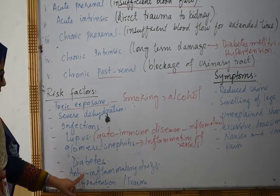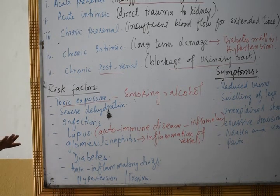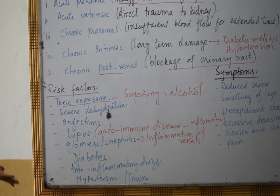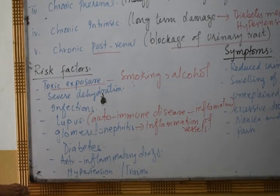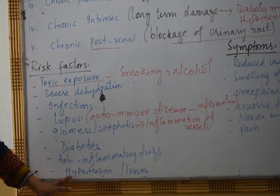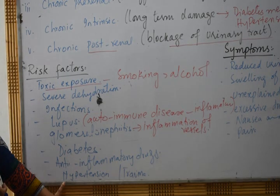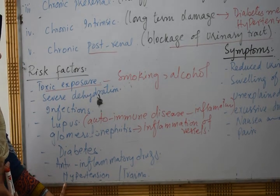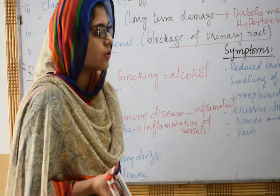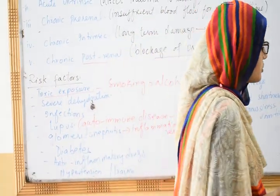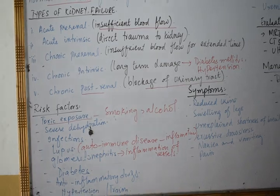Using long-term anti-inflammatory drugs — like aspirin and similar medications — can cause kidney inflammation, which contributes to kidney failure. Trauma is also a cause of kidney failure. These are the risk factors. Now we move to signs and symptoms.